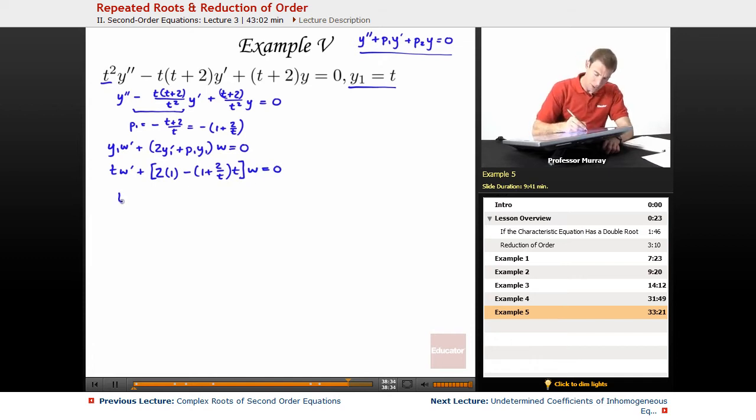So I get t w prime plus, let's simplify things in the parentheses: 2 minus, now I'm going to distribute this t, I'll get 2 minus t minus 2 over t times t, so minus 2, all this times w equals 0. I can simplify further: t w prime plus, the 2's cancel, I'll just get minus t w equals 0.